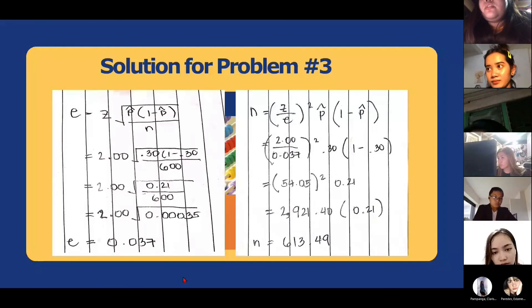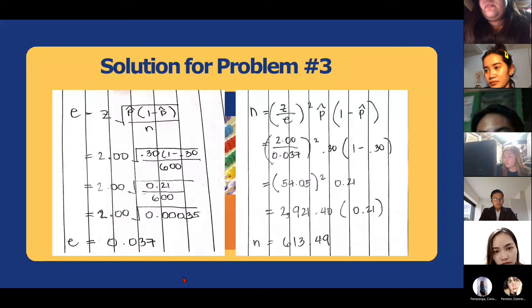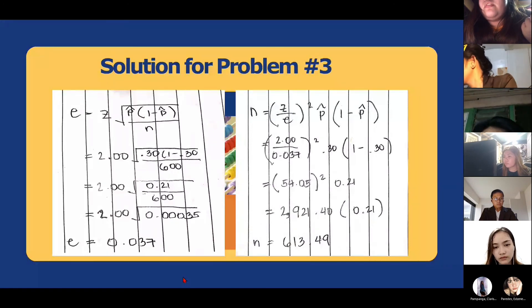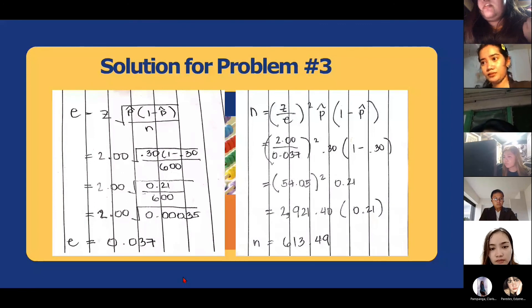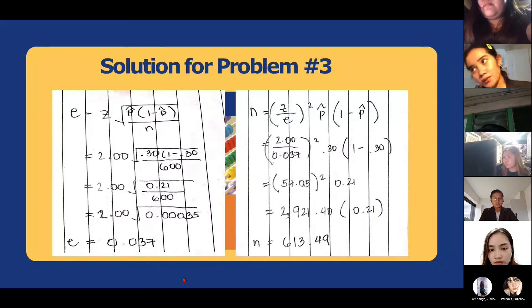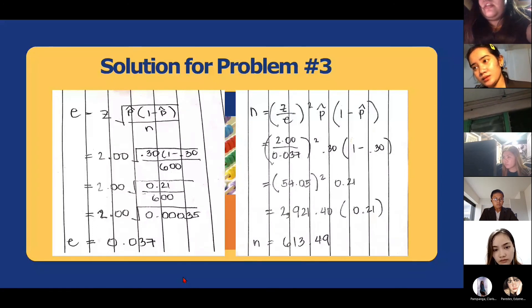Number of normal standard deviations over maximum acceptable error squared times sample proportion times 1 minus sample proportion equals 2.00 over 0.037 squared times 0.30 times 1 minus 0.30 equals 54.05 squared times 0.21 equals 2,921.40 times 0.21, so the sample size is 613.49.